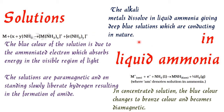Solutions in liquid ammonia: alkali metals dissolve in liquid ammonia, giving deep blue solutions that are conducting in nature. When alkali metals are kept in liquid ammonia, they give out electrons to the ammonia and convert into ammoniated electrons. The deep blue color is because free electrons, when they absorb a certain amount of energy that falls in the visible area of the spectrum, produce this color. The blue color of the solution is due to the ammoniated electrons which absorb energy in the visible region of light.